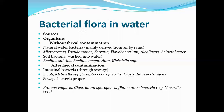The next important source of contamination is fecal contamination. This fecal contamination will carry intestinal bacteria. When we say fecal contamination it carries microorganisms from intestines of human beings or other animals. These intestinal bacteria are carried through sewage. Examples: E. coli, Klebsiella, Streptococcus fecalis, Clostridium perferringens — all called sewage bacteria. Apart from this there are also Proteus vulgaris, Clostridium sporogenes, filamentous bacteria, etc.